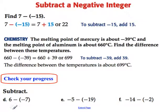I hope you tried those on your own. 6 minus a negative 7 is the same as 6 plus 7, which is 13. Negative 5 minus a minus 19 is the same as negative 5 plus 19, and that one is positive 14. And negative 14 minus a minus 2 is negative 14 plus 2, which is negative 12.